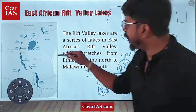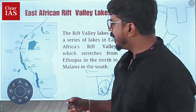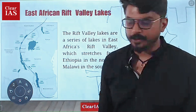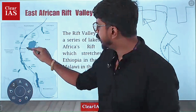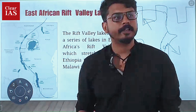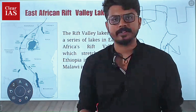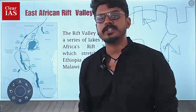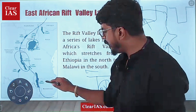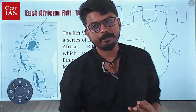Due to the rifting, there is a crack or fault developing, and in this fault water has accumulated forming three major lakes. We have marked Lake Victoria, to which the river Nile originates. Then Lake Tanganyika is another major lake we have marked. And Lake Malawi — we have marked all three major lakes.